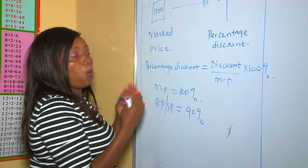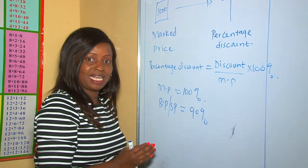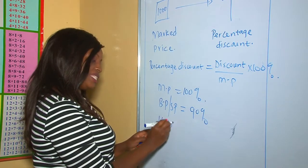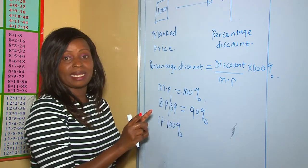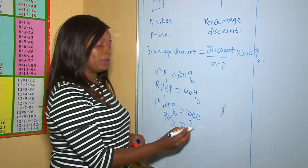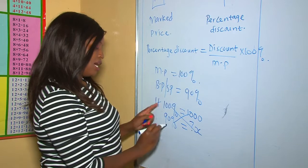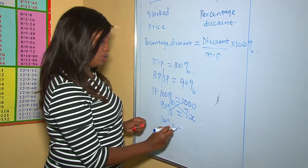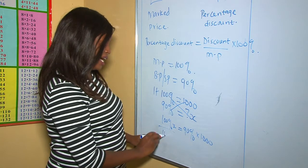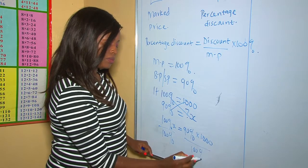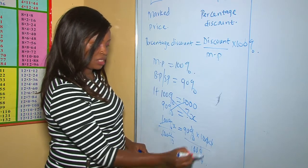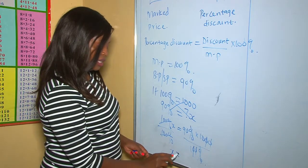Let's work out what the buying price will be if there's a discount of 10%. Applying the percentage relation: if 100% is equivalent to the marked price of 1000, what about 90% for the buying price? Cross multiplying: 100% × x = 90% × 1000. Dividing both sides by 100%, the zeros cancel, giving us x = 900.